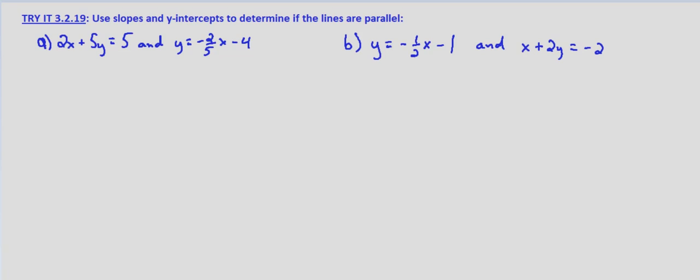So with y equals negative 2 fifths x minus 4, our slope equals negative 2 fifths, and the y-intercept is 0, negative 4. It's already in slope-intercept form.